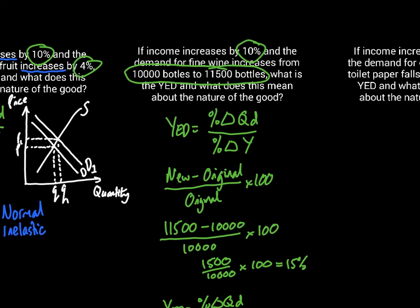If we have a quick look back, we're talking about fine wine. Fine wine is something where we would expect there to be a very strong relationship between the level of demand and income. What I would do there in terms of the diagram is I would draw a much larger shift to the right to indicate that higher level of elasticity.